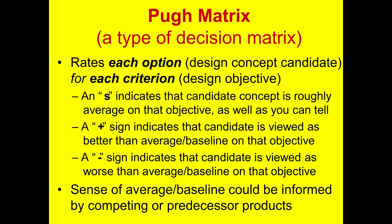In this case, the criteria are the design objectives that we developed back when we did our requirements phase. An S rating, which sometimes uses a zero instead, indicates what you might think of as an average or baseline level rating for a given option for a respective criterion. Sometimes that baseline is based on a comparison to a competing product,